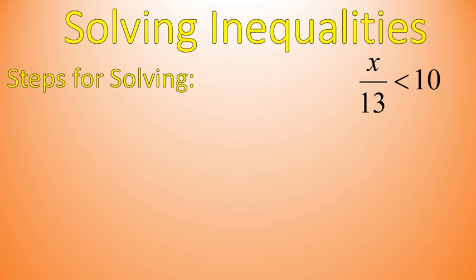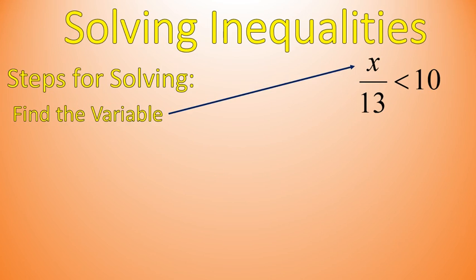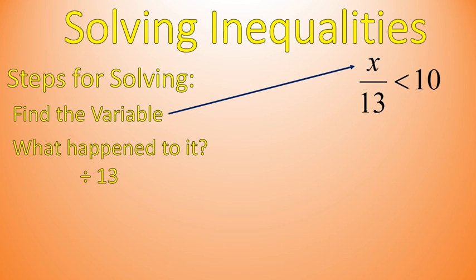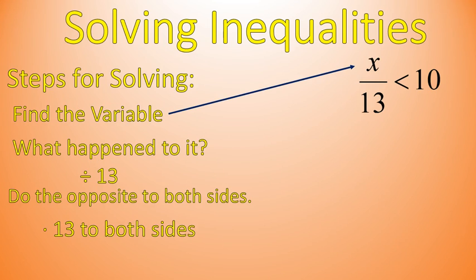Let's take a look. x over 13 is less than 10. How would we solve this? First step is that we find our variable. The variable is the letter x — the variable will always be the letter. Then we ask ourselves, what happened to that variable, or what's connected to that variable? It's divided by 13. So we're going to do the opposite, which is called the inverse operation, to both sides — multiplying both sides times 13.